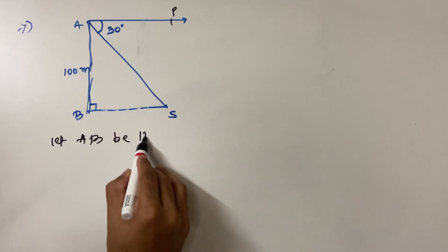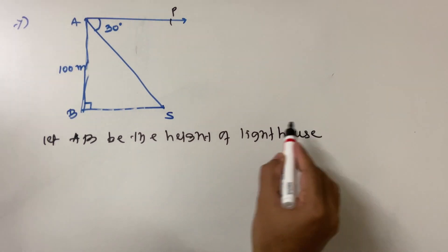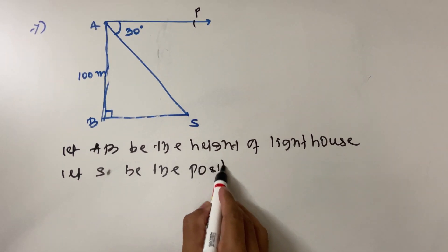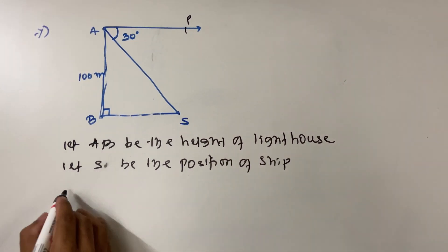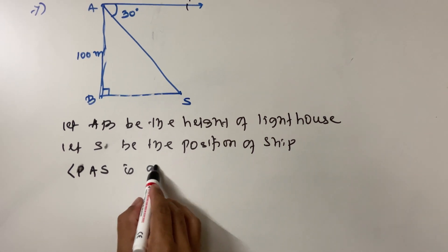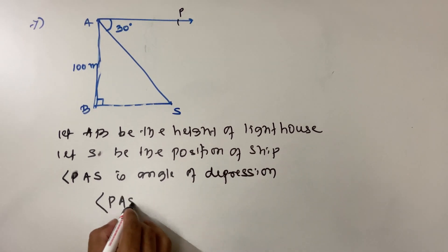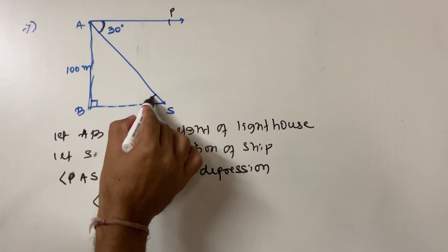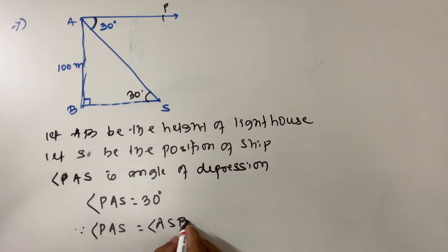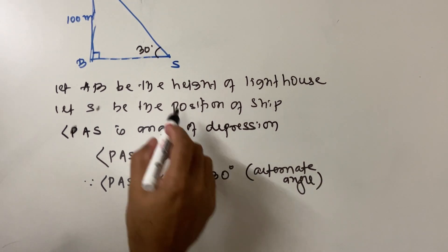Let AB be the height of the lighthouse. Let C be the position of the ship. Angle PAS is your angle of depression and that angle PAS equals 30 degrees. By alternate angles, angle PAS equals angle ASB, which is also equal to 30 degrees. These are alternate angles.